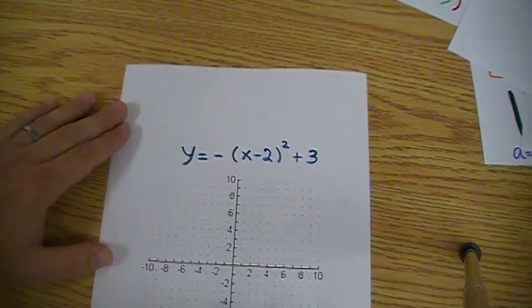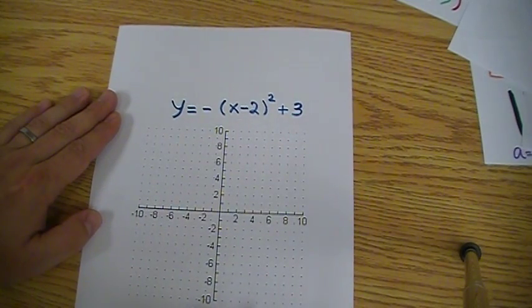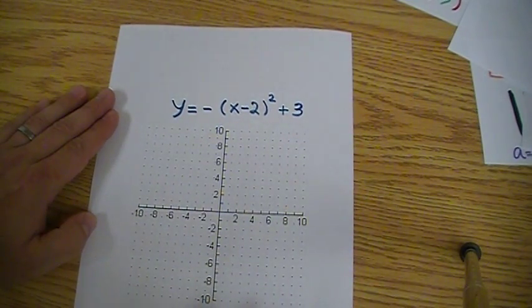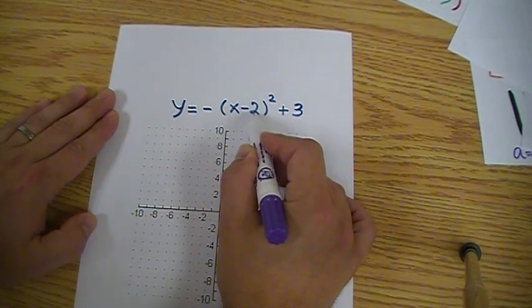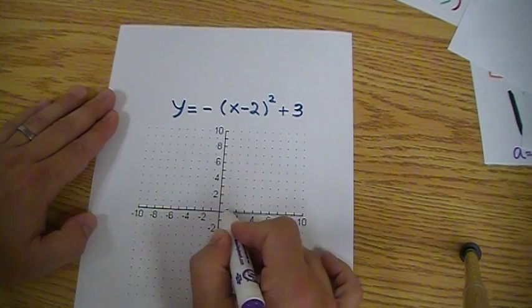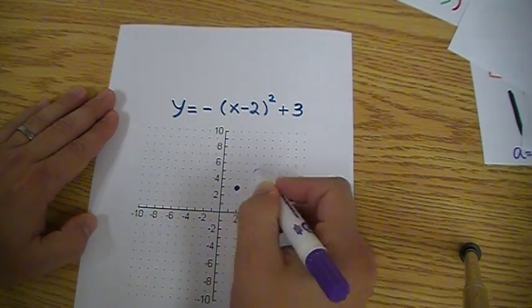What happens when we have more things on the parabola, like this one: minus (x minus 2) squared plus 3. We know the vertex, right? The vertex would be the opposite of this and the same as this. So the vertex is going to be at 2 and 3. So we're going to place that, 2 and 3 going up. There's our vertex.